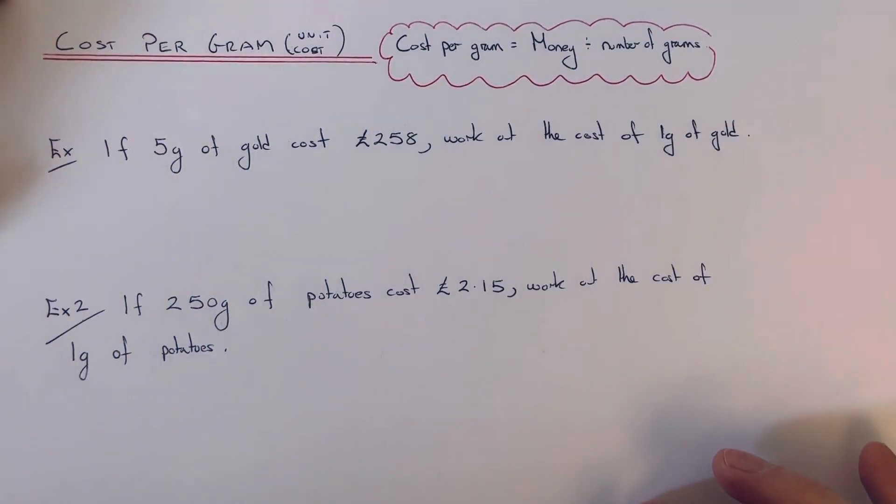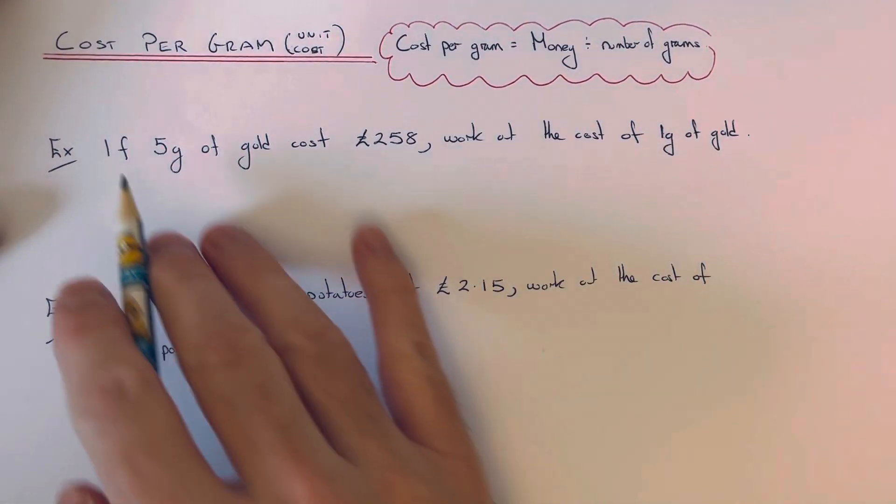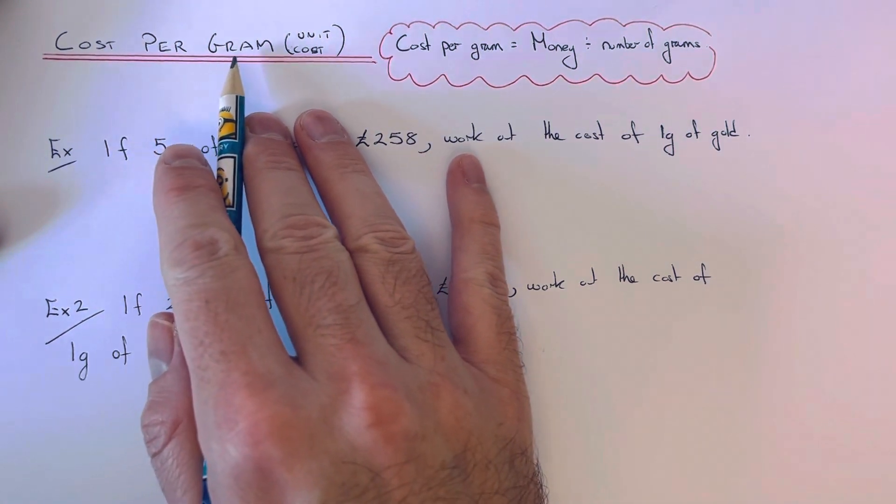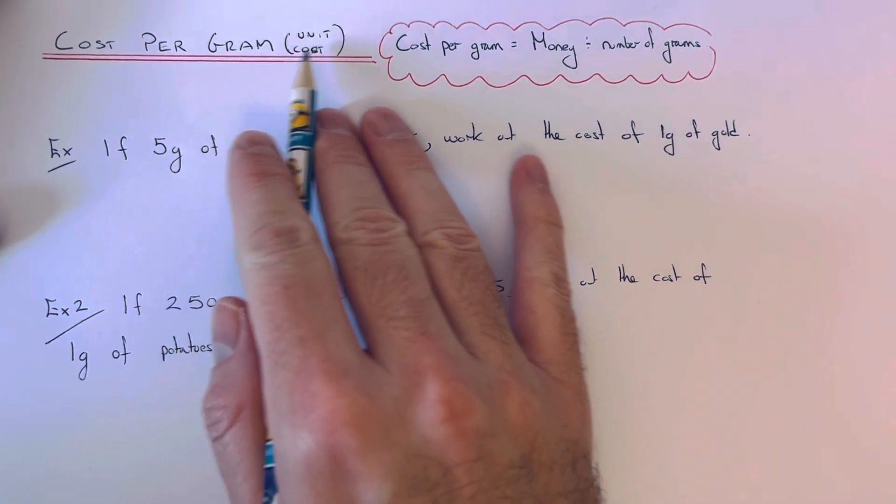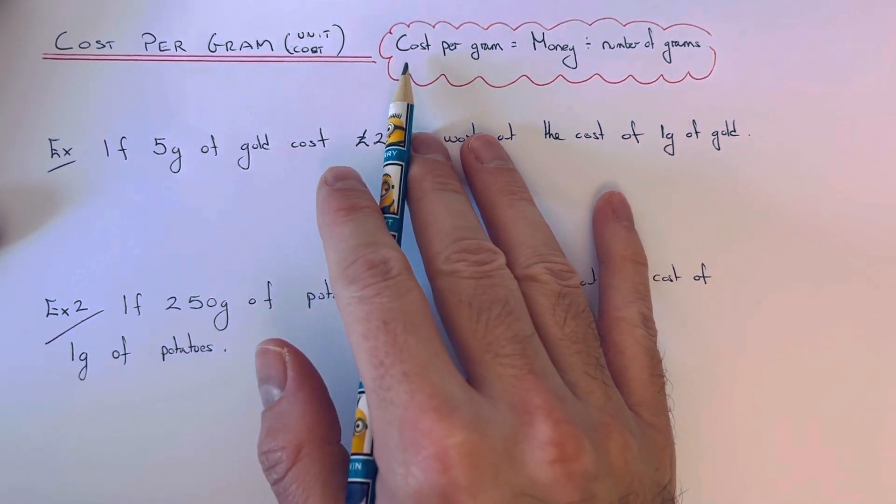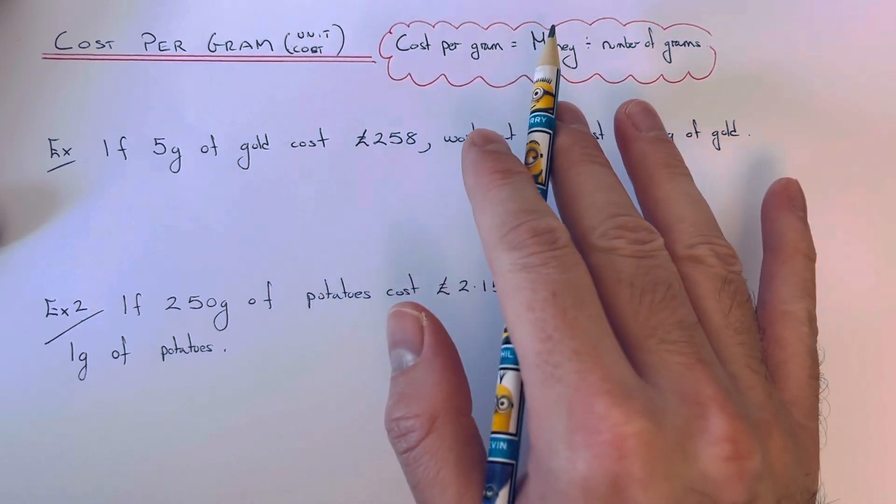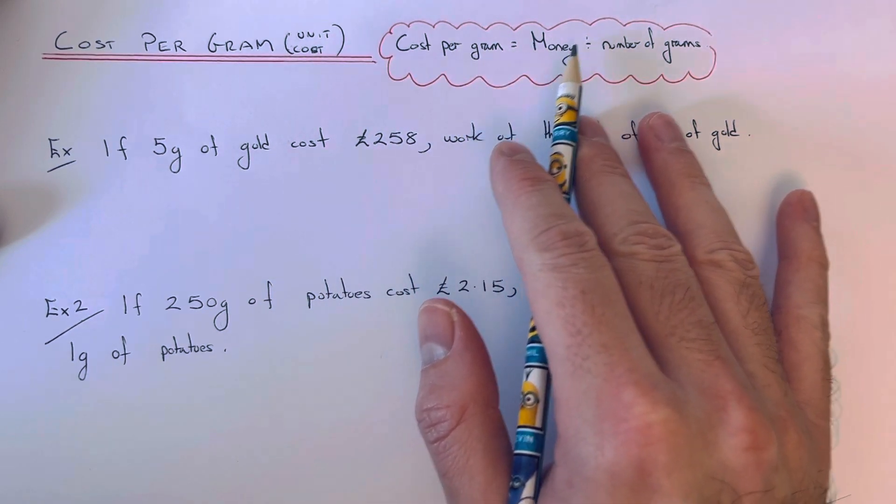Hi guys, welcome back, this is Maths 3000. Today I'm going to show you how to work out the cost per gram or the unit cost. To work out the cost per gram, you put your money first and divide it by the number of grams that you are buying.